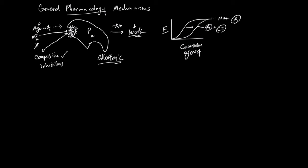The allosteric pocket means something will bind to it and the protein is going to change. The change of the protein will result in a change in the amount of work, but allosteric regulation cannot directly cause work — it's usually the modification of the work driven by the agonist. So allosteric inhibition and activation change how agonist binding does the work — they are helpers.